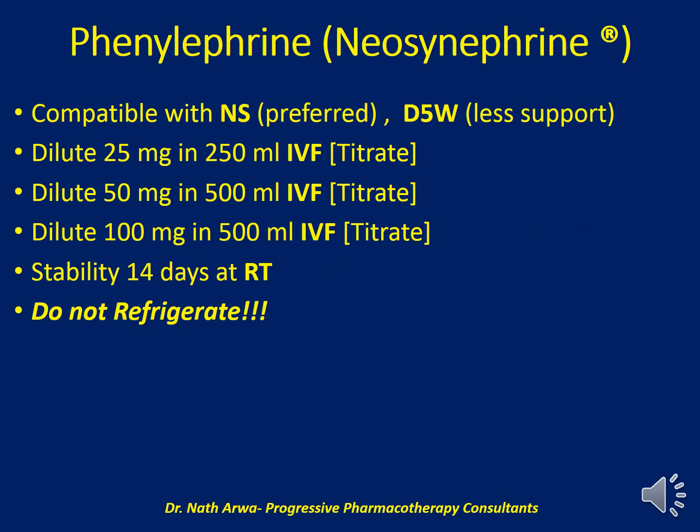Phenylephrine is compatible with both normal saline and 5% dextrose, but normal saline is the preferred IV fluid for dilution. For 25 mg of phenylephrine, use 250 ml of IV fluid; for 50 mg, dilute in 500 ml; and 100 mg doses should be diluted in 500 ml of IV fluid of choice. After homogenizing, titrate according to your cardiac or critical care team. Such solutions are stable for 14 days at room temperature, and literature emphasizes we should not refrigerate such IV admixtures.